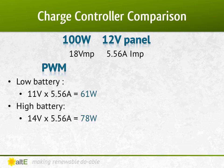When the battery is fuller, at 14 volts, more of the panel's available voltage is used, and with the same 5.56 amps, the charge controller is outputting 14 volts times 5.56 amps equals 78 watts into the battery.